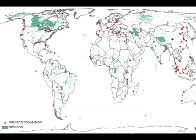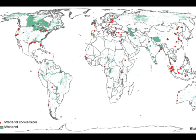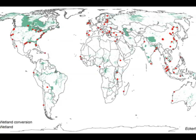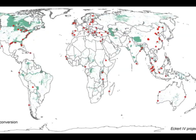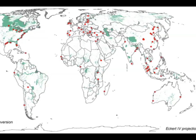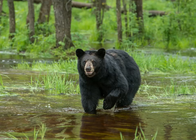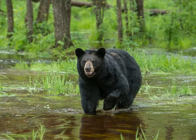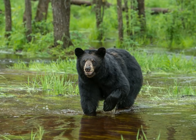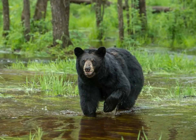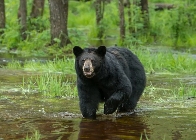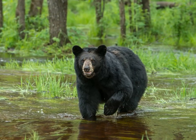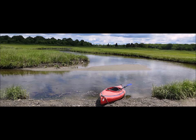Wetlands occur where there's a lot of water input but not a lot of water output. Ecologically, wetlands are really important, as they have high biodiversity in plants and animals and are vital in the natural filtration of water and air. They are also important in protecting against shoreline erosion.